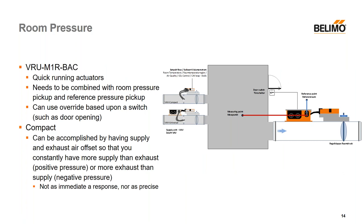Moving on to room pressure: our recommendation is to use the VRU-M1R-VAC in combination with a quick-running actuator. Same as the duct pressure application, you need a reference pressure pickup in an area where pressure isn't fluctuating, and instead of a duct pressure pickup you'll need a room pressure pickup. A nice feature of this product is a built-in override — for example, if a door is connected to a switch, you can prevent the actuator from moving and chasing a pressure measurement just because of a door opening, avoiding unnecessary cycling and reducing actuator wear.